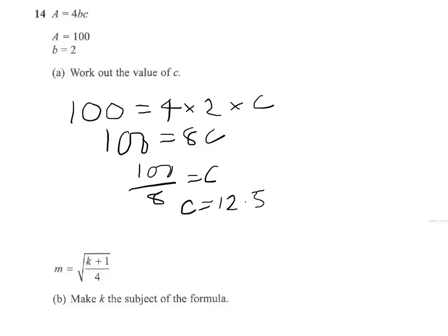So we'll start off by squaring both sides to get rid of the square root. So that gives me m squared equals k plus 1 divided by 4.